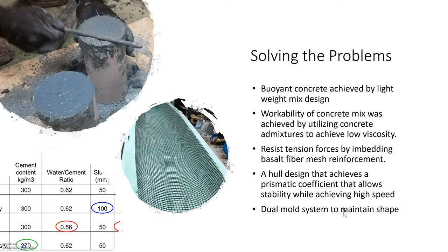In addition, we resist all tension forces by embedding a basalt fiber mesh inside the concrete. We then achieve the high resolution hull design by using a two-part mold that ensures high stability and high speed while paddling.